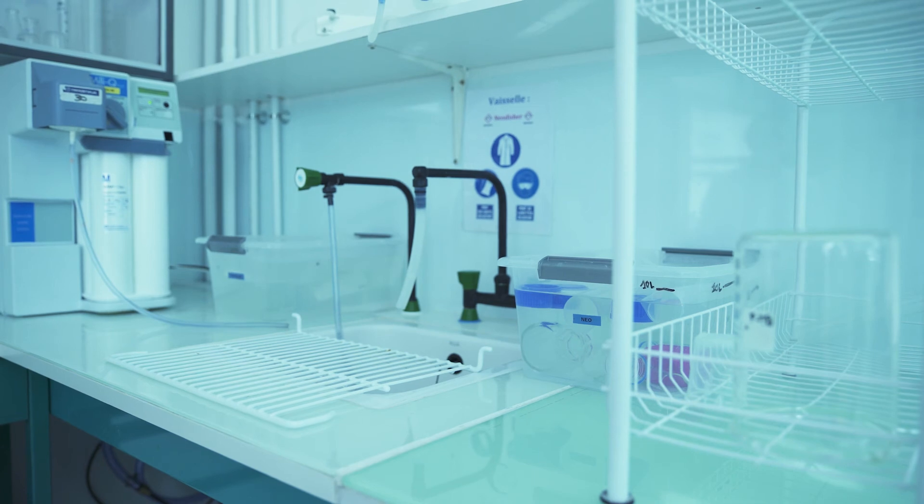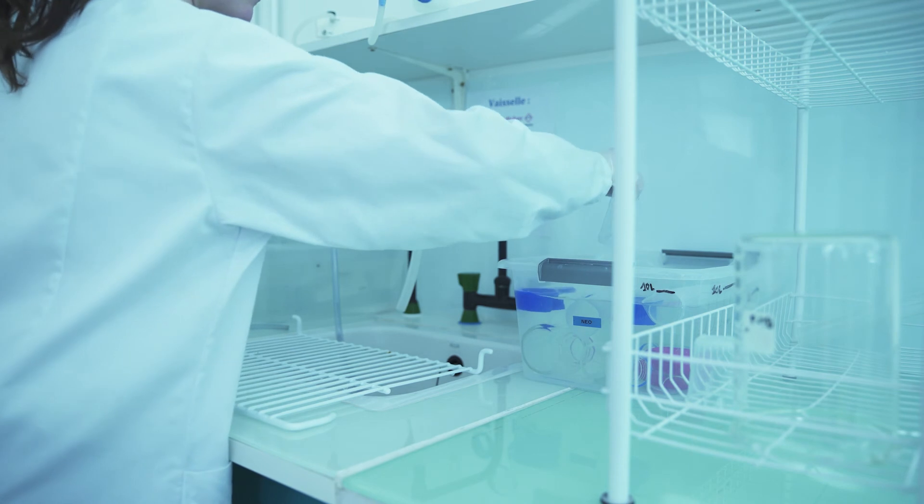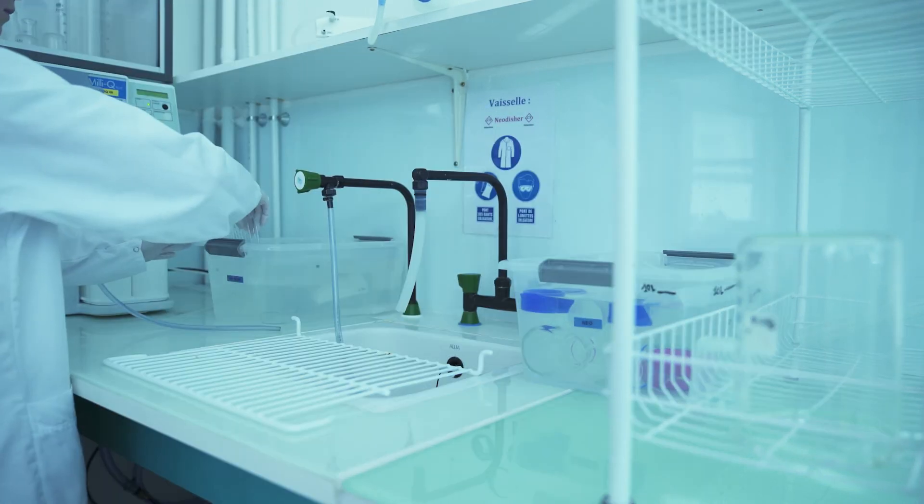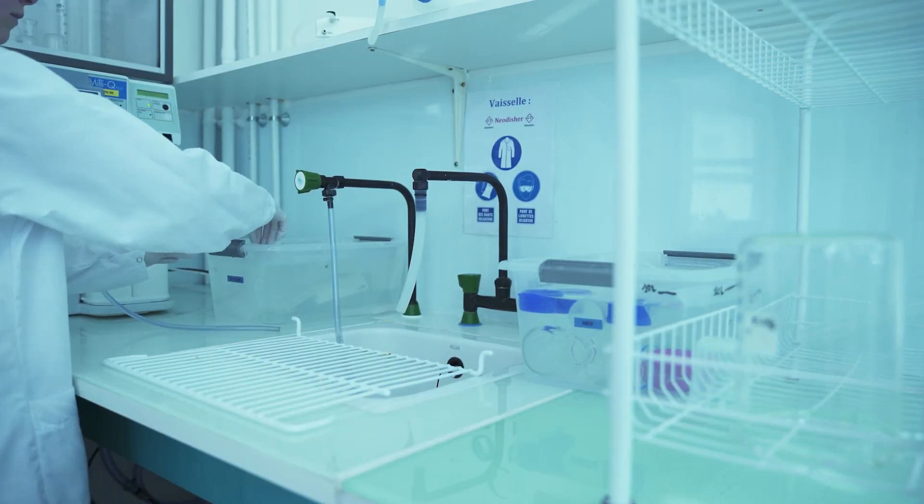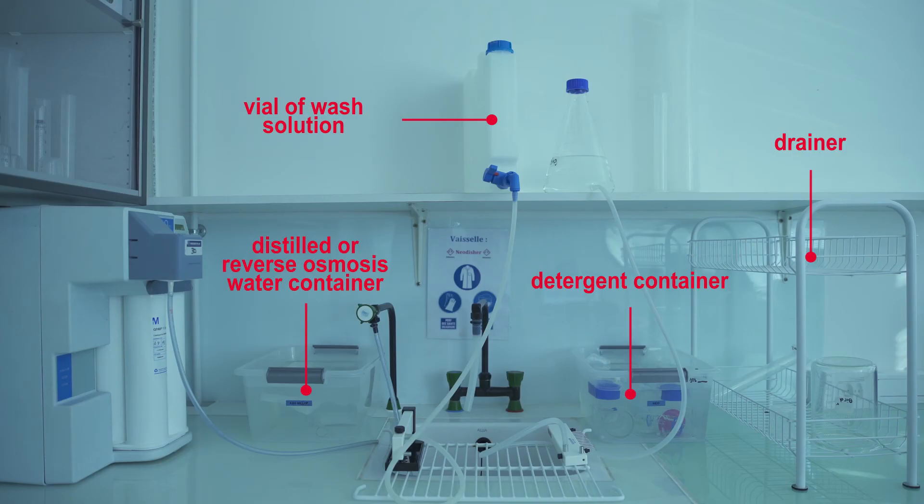For cleaning reusable material, you will need a detergent container for washing and decontamination, reservoirs, glassware, a distilled or reverse osmosis water container, which allows the rinsing of the reusable material after detergent step, a drainer.